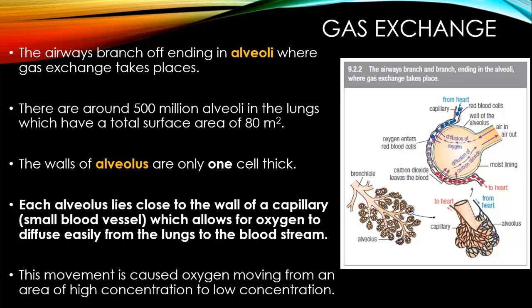The airways branch off, ending in the alveoli, where the gas exchange takes place. There are around 500 million alveoli in the lungs, which have a total surface area of about 80 metres squared. The walls of the alveolus are only one cell thick, so they're really, really thin. Each alveolus lies close to the wall of a capillary, which is a small blood vessel, and that allows the exchange of oxygen into the bloodstream from the lungs. That movement is caused by different levels of concentration — moving from a high concentration into an area of low concentration of oxygen, from the lungs where there's high concentration into the blood where there's low concentration.